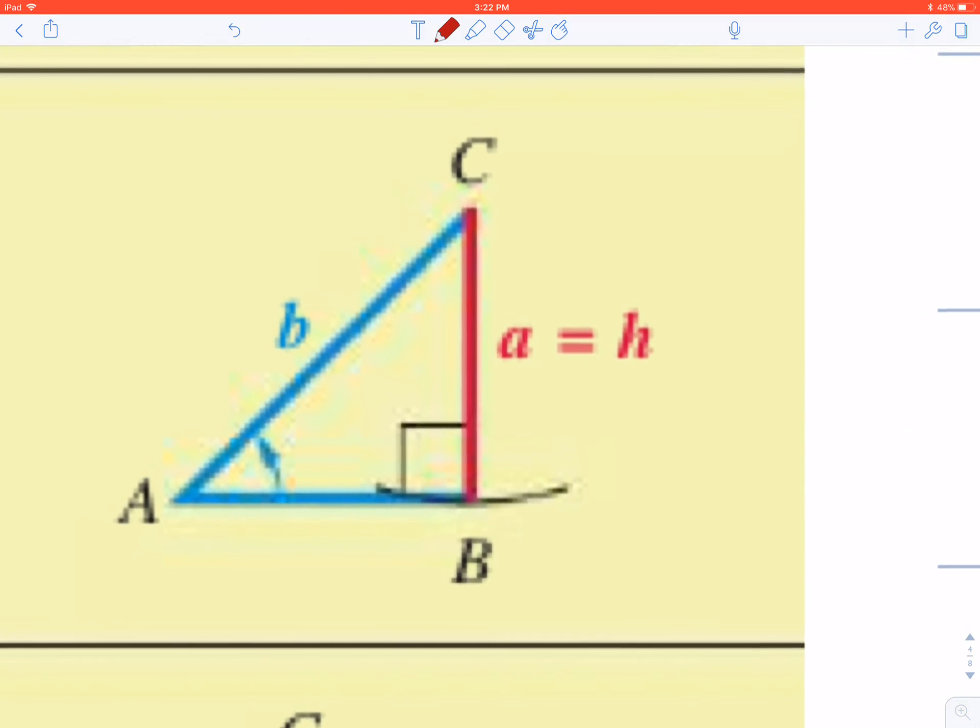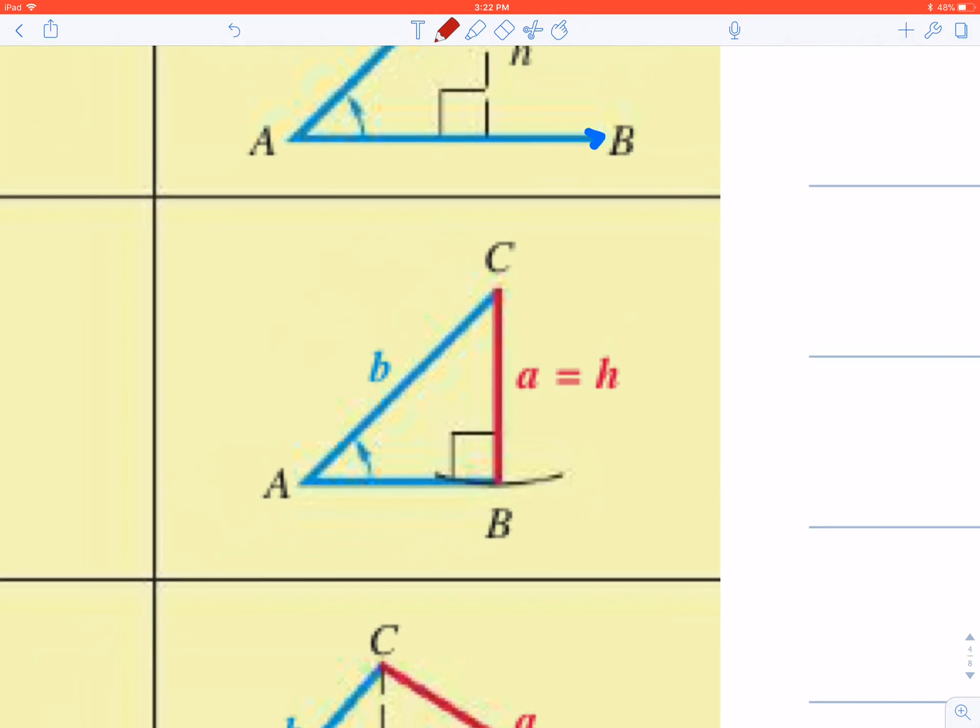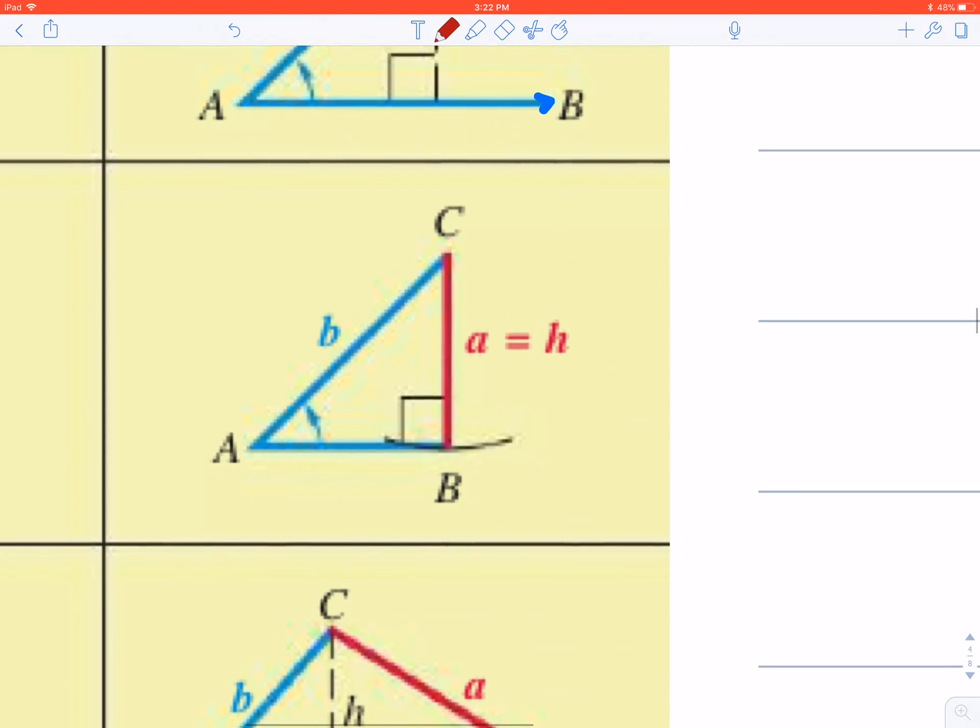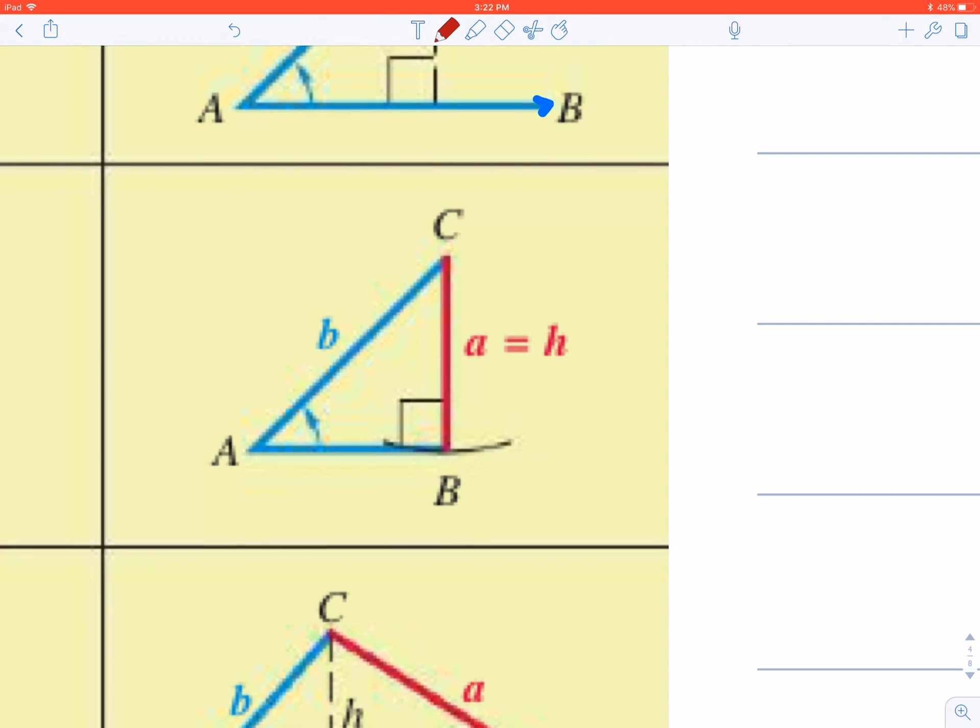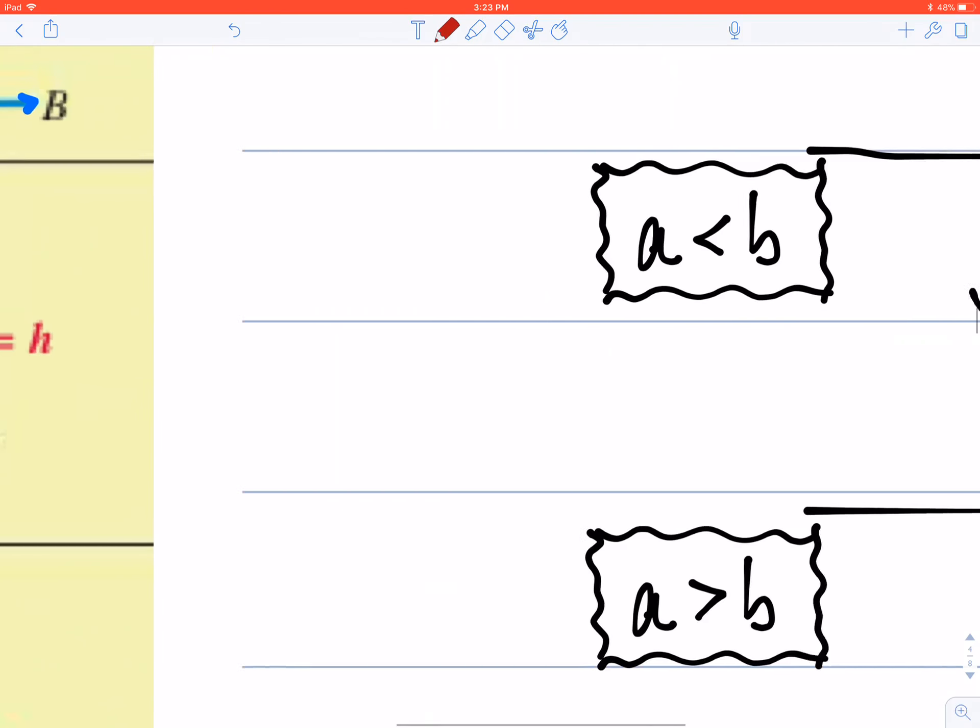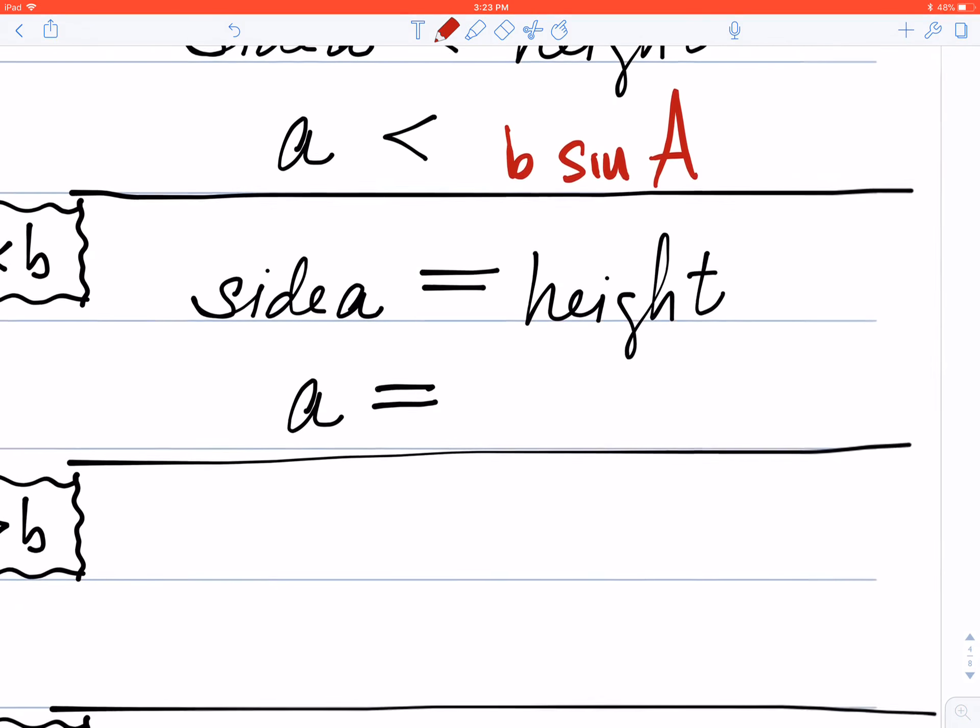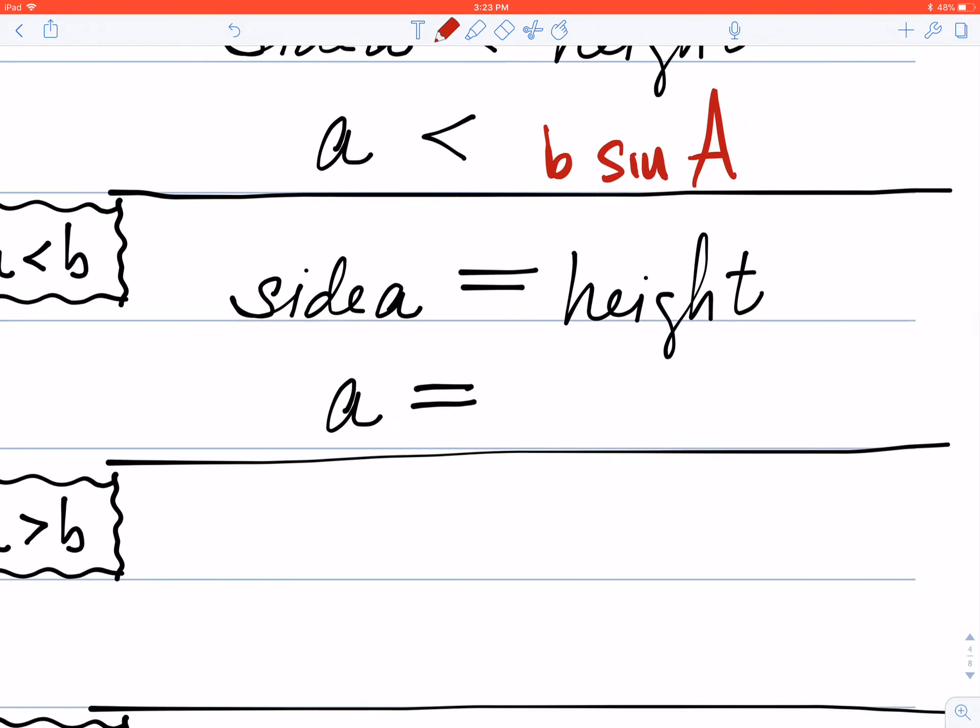Now, let's look at number two, option number two here. In this case, side a is just right. So it's almost like we've got Goldilocks so far. We had one that was too short and now we've got one that's just right. In fact, side a is exactly the same length as the height of my triangle. And in fact, this causes a right triangle. So you'll notice over here that side a is the same or equal to the height. So we'll say that side a is equal to b sin A.